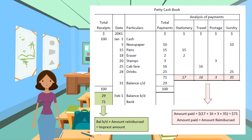The double entry to set up a petty cash fund: debit petty cash, credit bank or cash. To reimburse petty cash funds: debit expenses, credit bank or cash. Example of petty cash reimbursement on 1st February: debit stationery expenses $17, travel expenses $16, postage expenses $3, sundry expenses $35; credit bank $71.